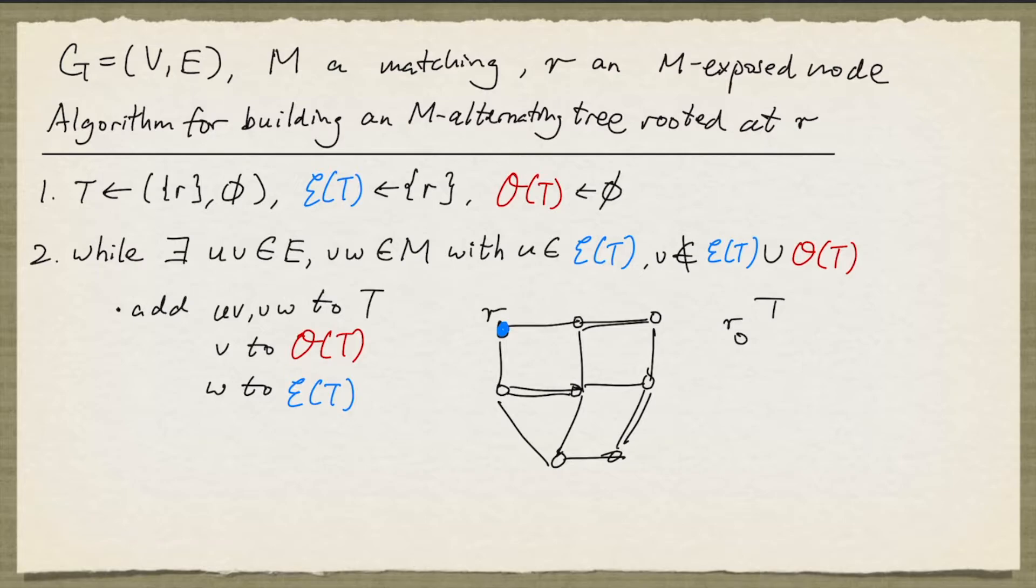Now we enter the loop, and we can add this pair of edges to T. And so T now looks like this. This node is added to the even set, and this node here is added to the odd set.